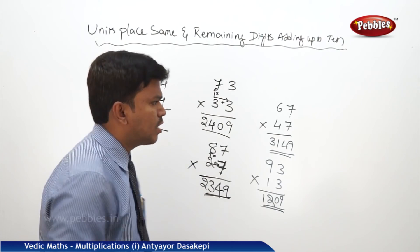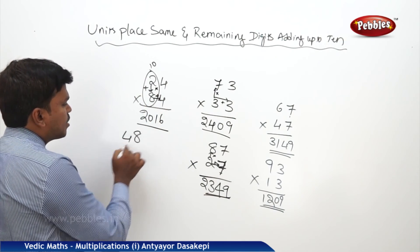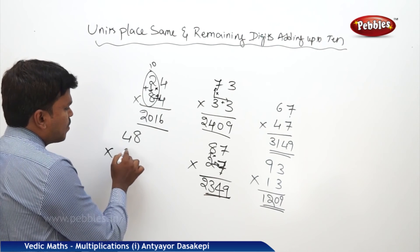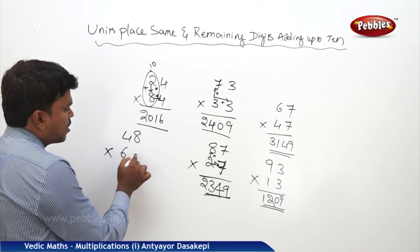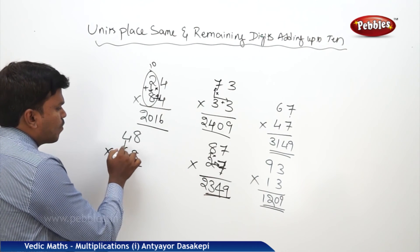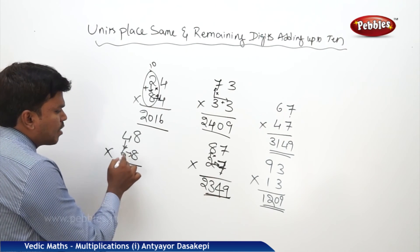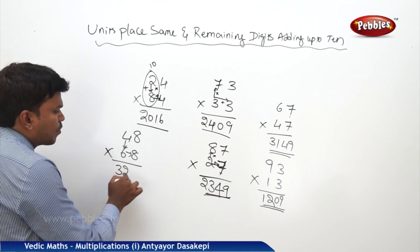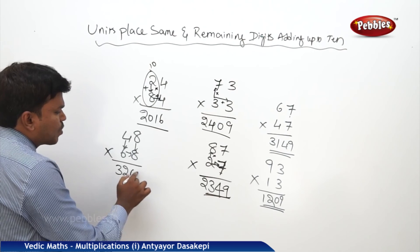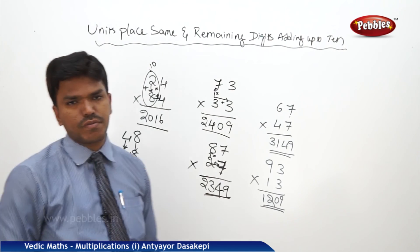Similarly, 48 into 68. 4 times 6 is 24. 24 plus 8 is 32. Write 32 here. What is 8 times 8? It is 64. So your answer is 3264.